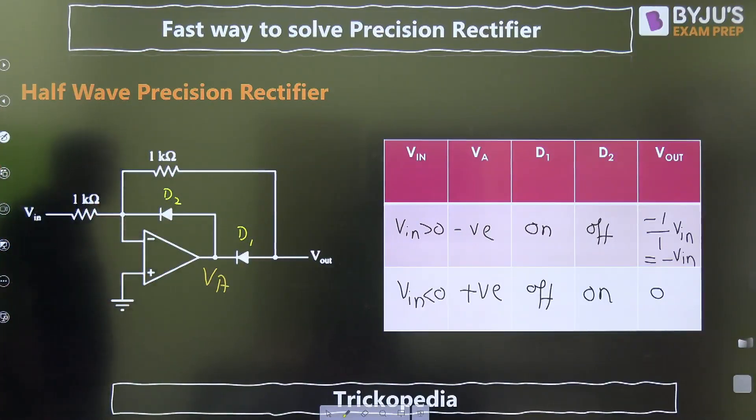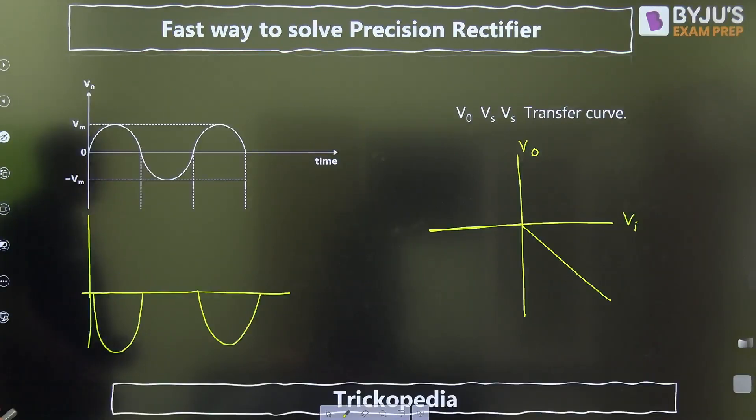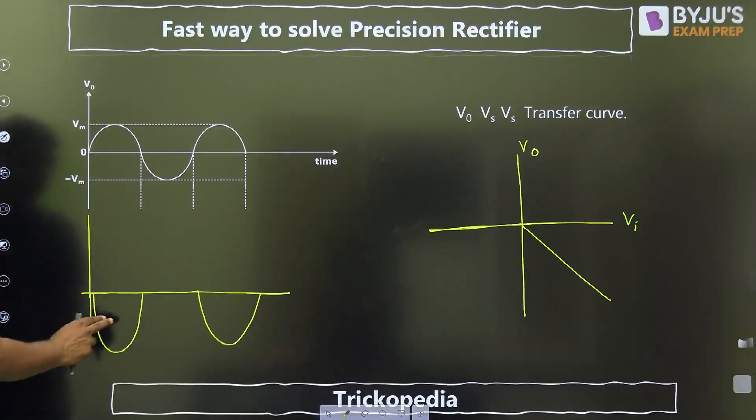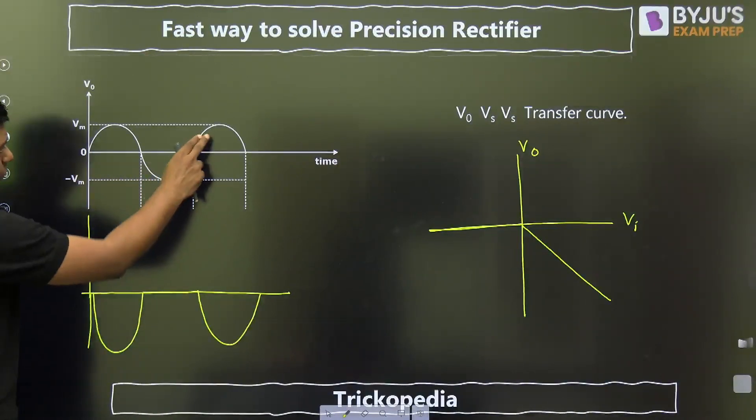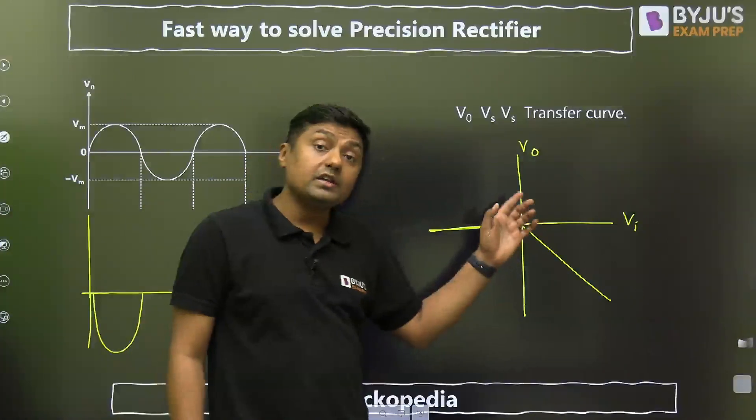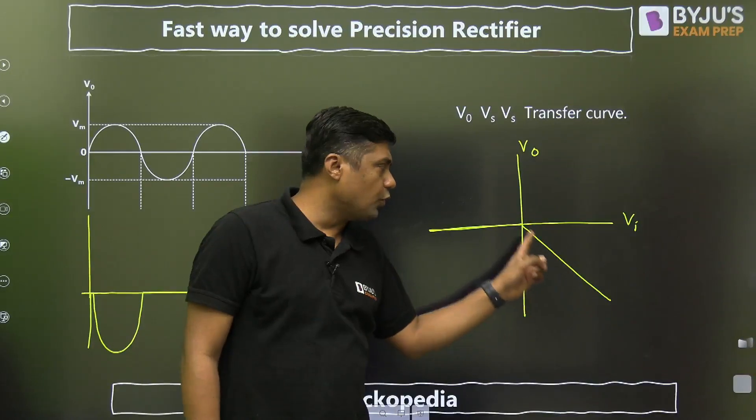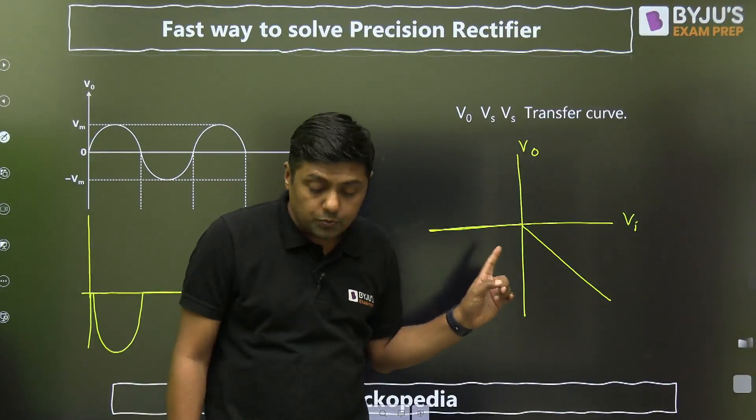For this diagram, what is the output then? For positive half, we are getting negative output. For negative half, 0. Again, for positive half, negative output. Transfer curve will lie in the fourth quadrant. For positive half, we are getting negative output. For negative half, we are getting 0 output.